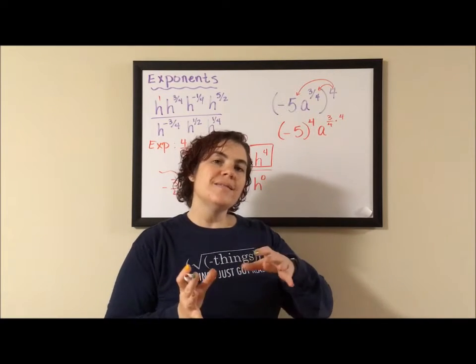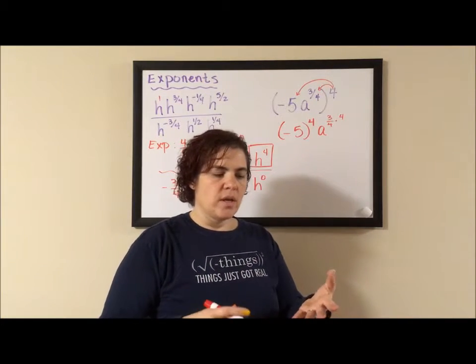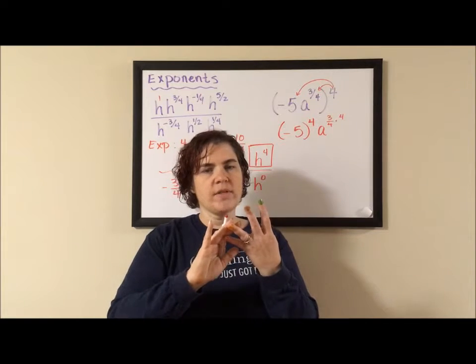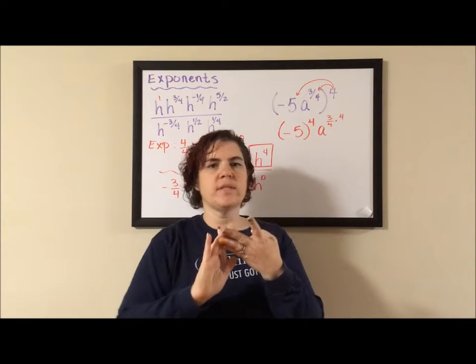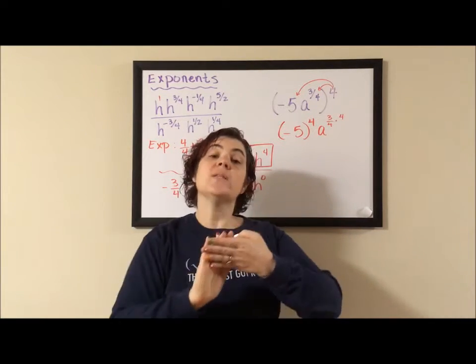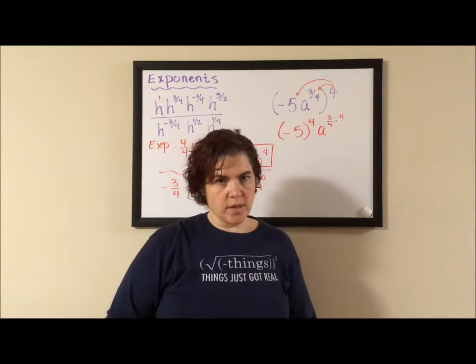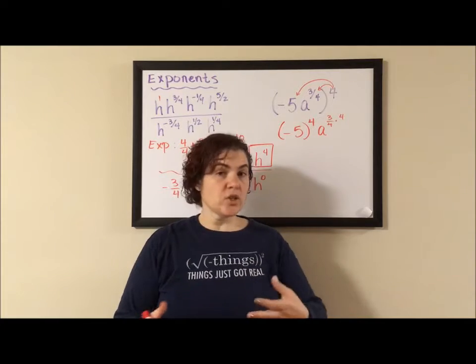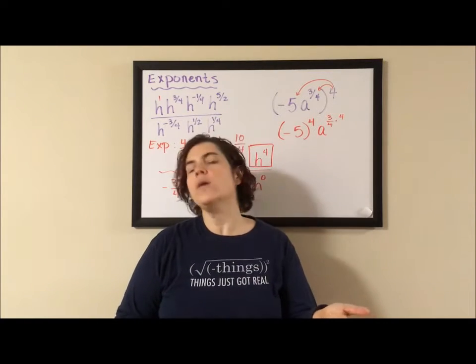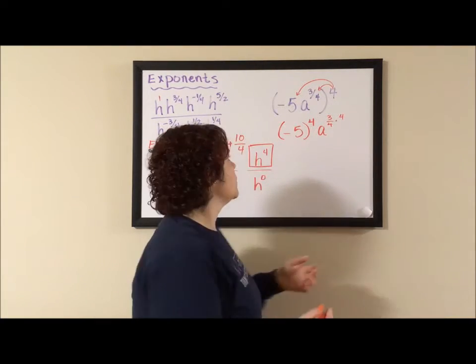First of all, it's negative five to the fourth. Negative five times negative five is positive, times negative five is negative, times negative five is positive. So the first thing we have to remember is that our answer is positive. The next thing we need to do is actually take five to the power of four. Well, five to the power of four is 625.